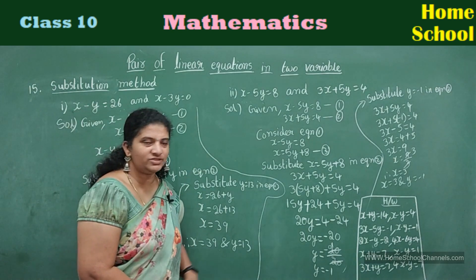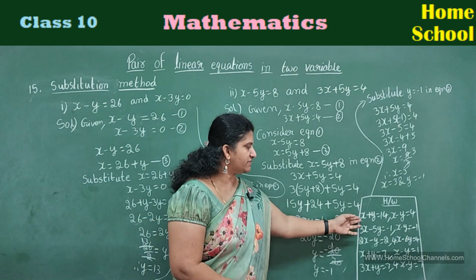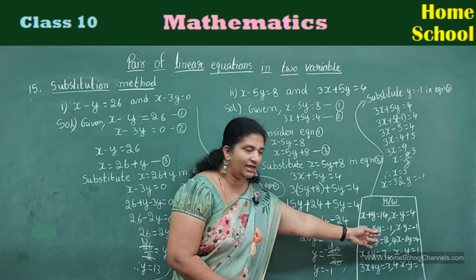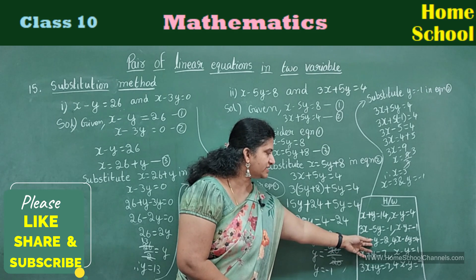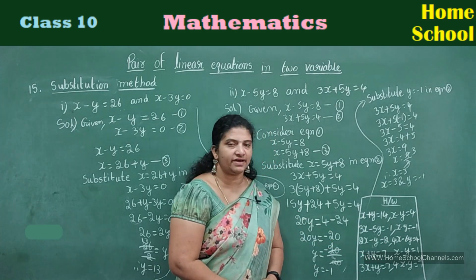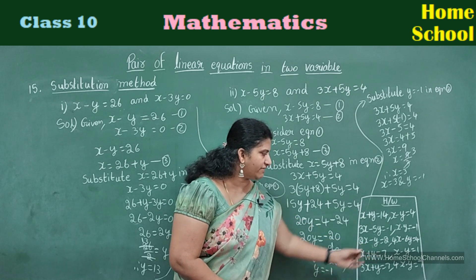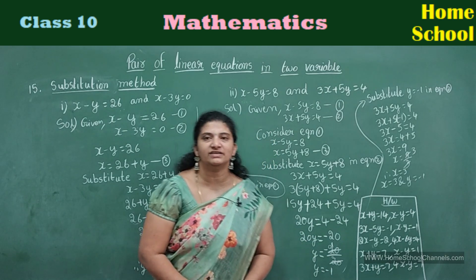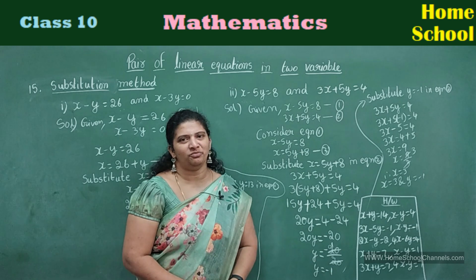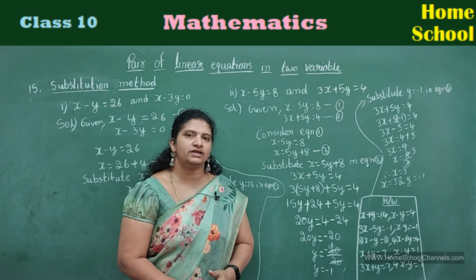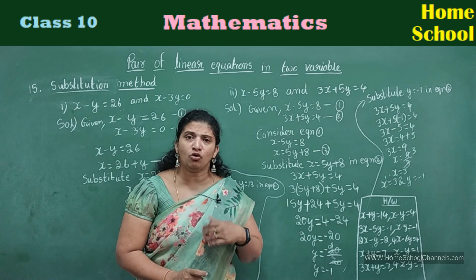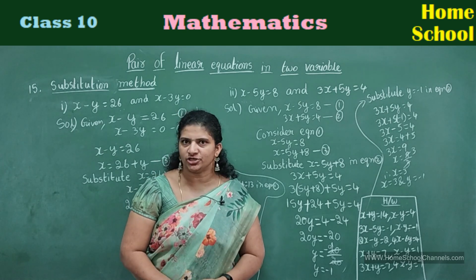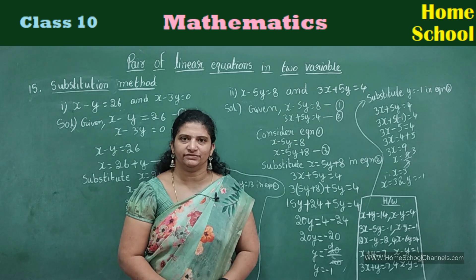If you understand these two problems, you can take some homework problems: x plus y equal to 14 and x minus y equal to 4; 3x minus 5y equal to minus 1 and x minus y equal to minus 1; 2x minus y equal to 2 and 4x minus 6y equal to 4; x plus y equal to 7 and x minus y equal to 1; 3x plus y equal to 7 and 4x minus y equal to 7. Along with these homework problems, do the two solved examples again. If you want to become perfect, practice more and more examples and solve them using substitution method — then this method you will perfect.